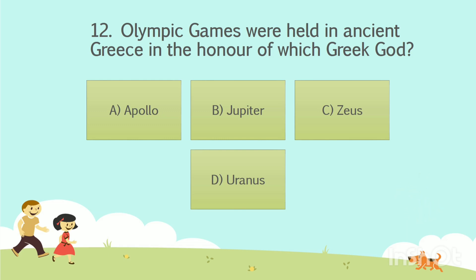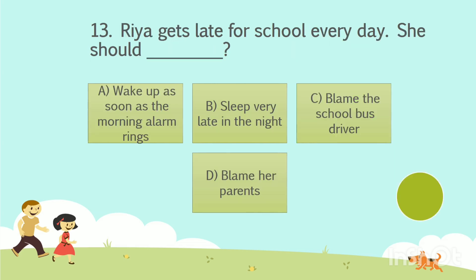The answer is Option C: Zeus. Question number 13. Rhea gets late for school every day. She should dash. Option A: Wake up as soon as the morning alarm rings. Option B: Sleep very late in the night. Option C: Blame the school bus driver. Option D: Blame her parents. Your time starts now.